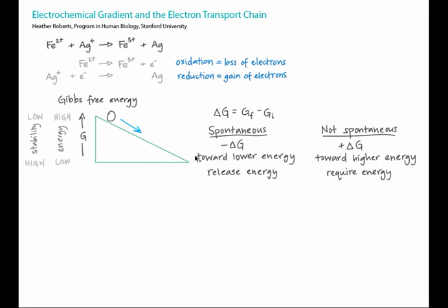Spontaneous processes start at high energy and move toward lower energy, resulting in a negative delta G, which is defined as G final minus G initial. These processes release energy, which can dissipate into the surroundings as heat, or be harnessed to do work. Non-spontaneous reactions go from low to high energy, have a positive delta G, and require energy to be put into the system.